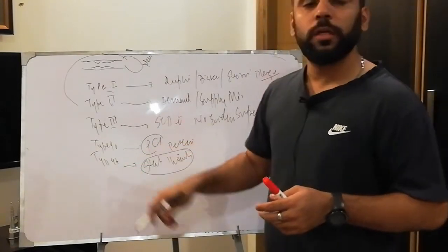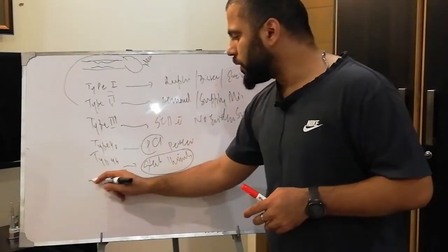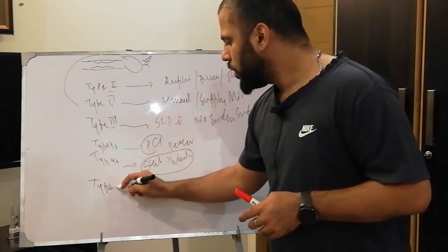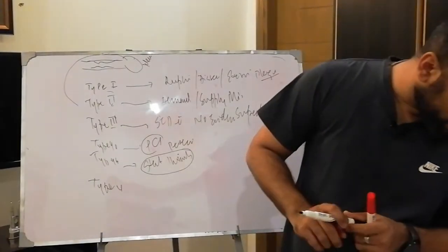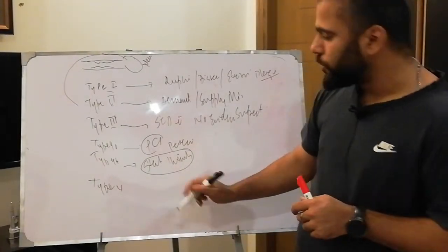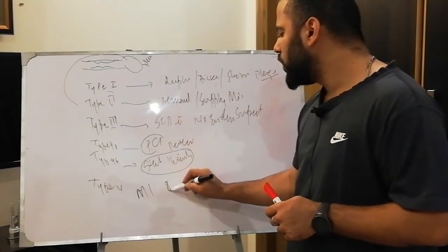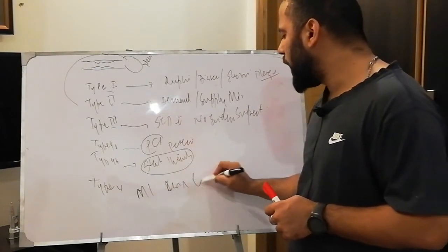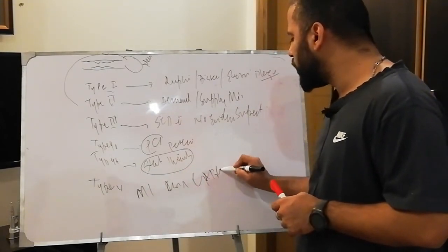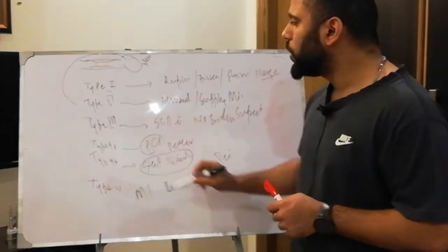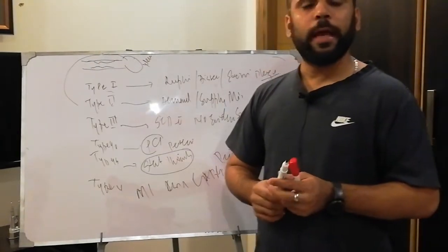MI because of stent thrombosis is Type 4B. Type 5 MI is MI associated with CABG — post or periprocedural CABG. So these are the 5 types of MI.